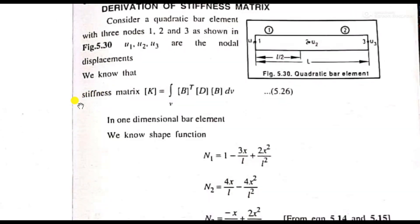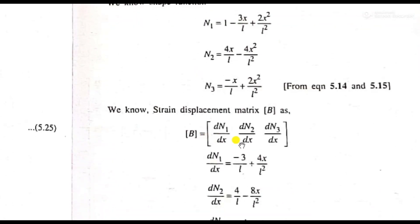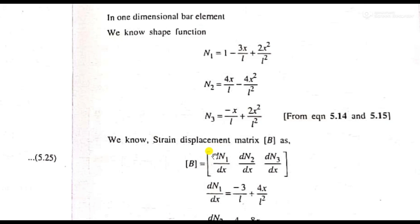For stiffness matrix, the formula is integral over V of B-transpose into matrix D into matrix B into dV. For 1D bar element, we have 2-node and 3-node quadratic elements. The matrix B contains the derivatives of the shape functions. We have B-transpose times D times B, where the shape function derivatives are involved.